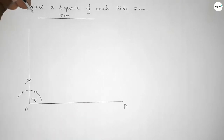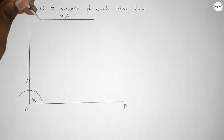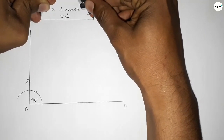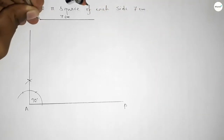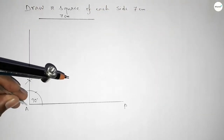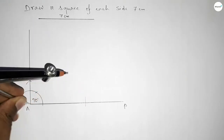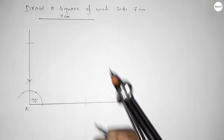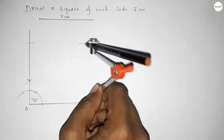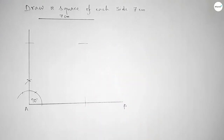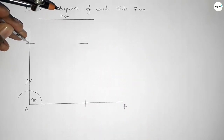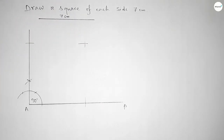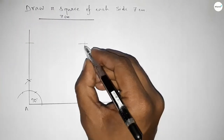Then we have to take the length 7 centimeters using the compass. Putting the compass on point A and cutting here and cutting here with the same length, then putting the compass and drawing an arc — both curves intersect at a point.